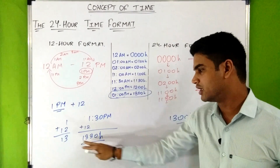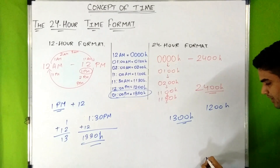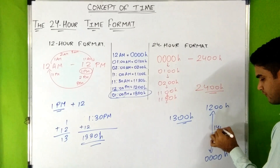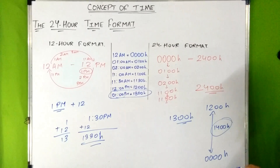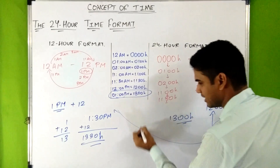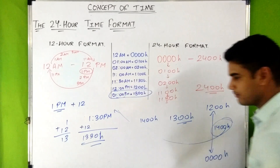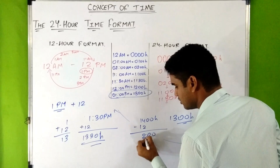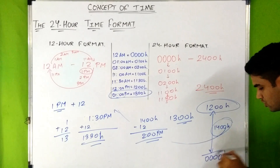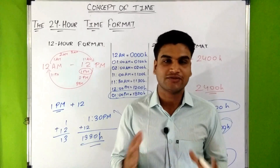Similarly, for times between 1200 hours and 0000 hours — if you have a 24-hour time and want to convert to 12-hour format — you subtract 12 from the hours. For example, 1400 hours minus 12 gives 2 PM. Keep in mind that for times between 1200 and 0000 hours, when converting to 12-hour format the result will be PM, not AM.